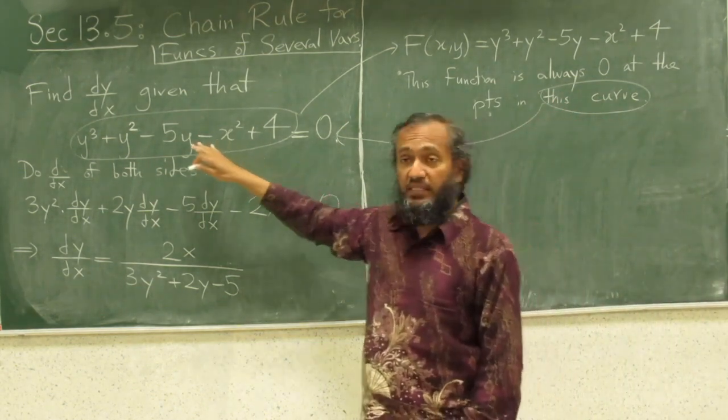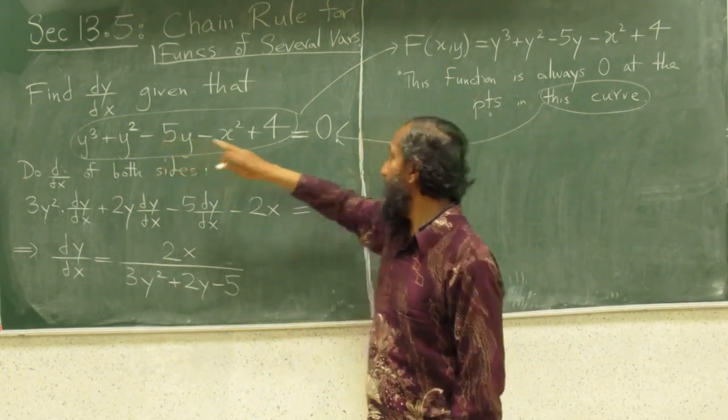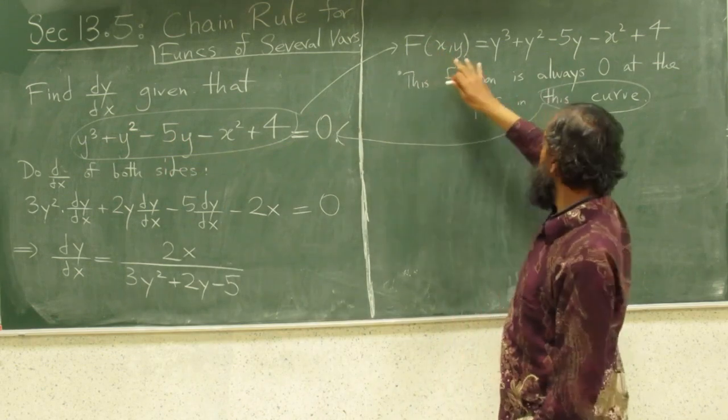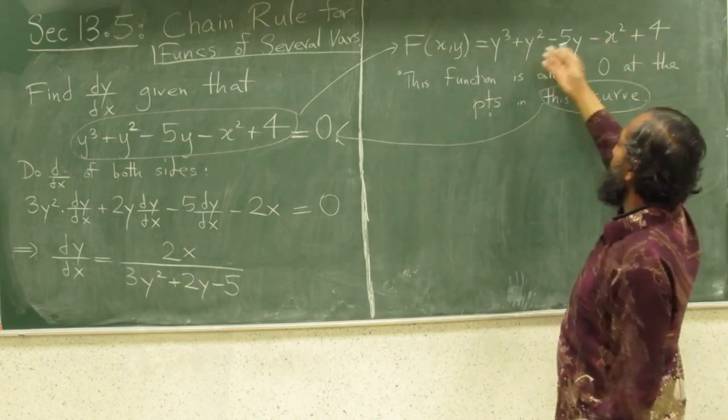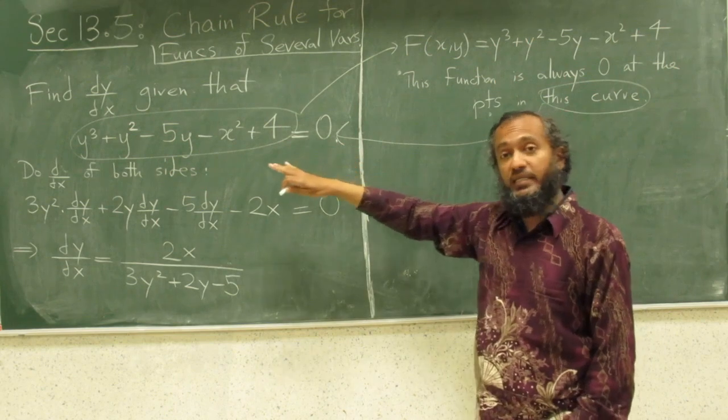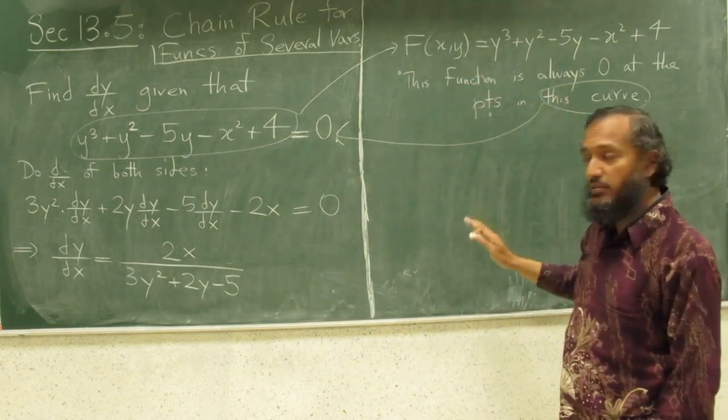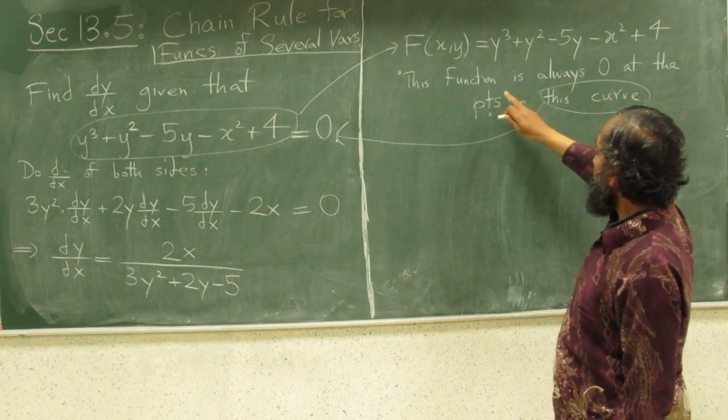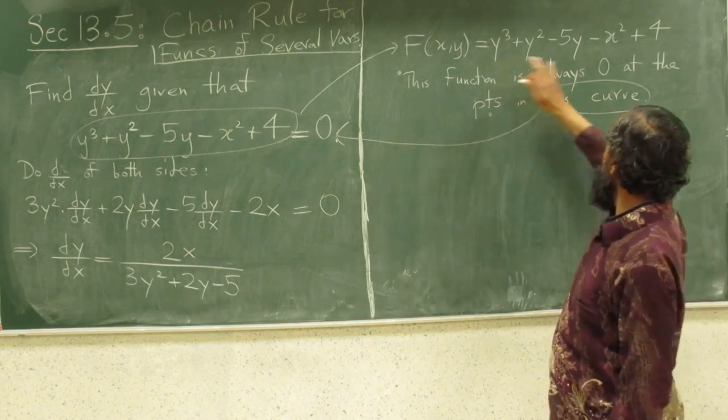As long as you take, what do I mean by this curve, I mean this curve. As long as you take x, y that satisfies this equation, you take that x, y, plug it into this function, plug it in, well, of course, that will equal 0. If you take a point that's not on this curve, of course, it could give you a different value. So, at those points, this function is always 0.